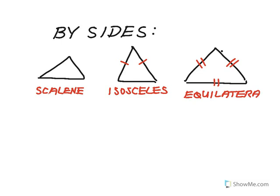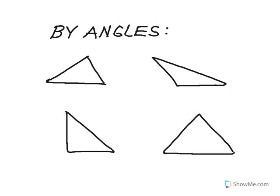So every triangle is either going to have no congruent sides, two congruent sides, or all three sides congruent. The second way we can classify triangles is by angles. If I have three acute angles — so they're all less than 90 degrees — I have what I call an acute triangle.